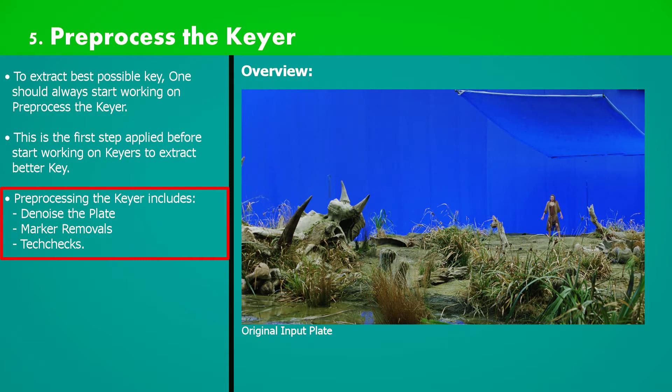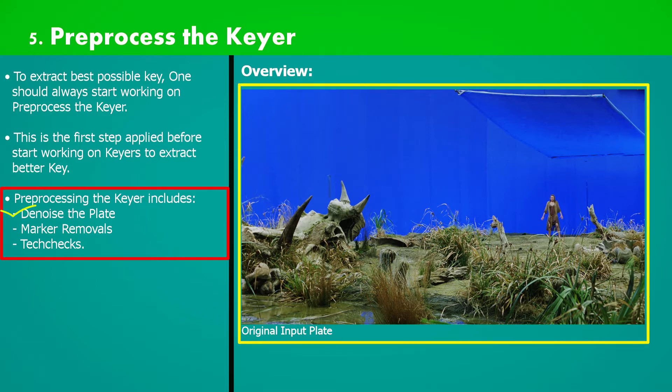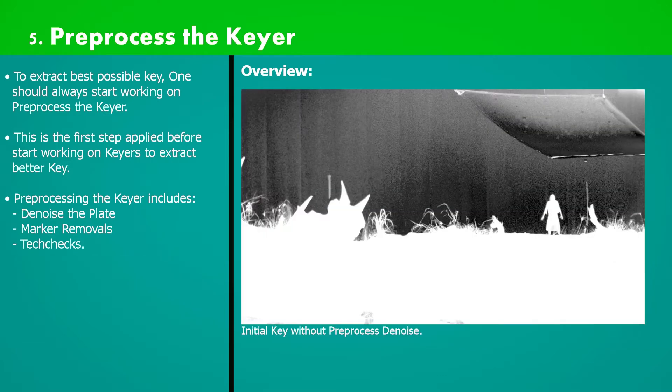Here is a blue screen input plate. If we try to key out using some keyers such as key light, our initial key might look like this with lots of grains which will be hard for tweaking to make this into perfect white and perfect black with soft edges.